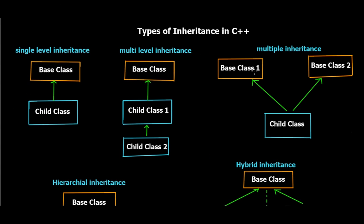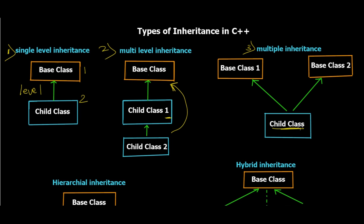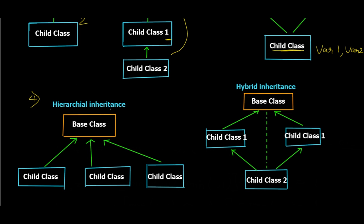There are five different types of inheritance in C++. The first is single-level inheritance — one base class and one child class. The second is multi-level — a child class inherits from a base class, and another child class inherits from that first child class. The third is multiple inheritance — one child class inheriting from two different base classes, so variables from both come into the child. The fourth is hierarchical inheritance — one base class with multiple child classes each inheriting from it.